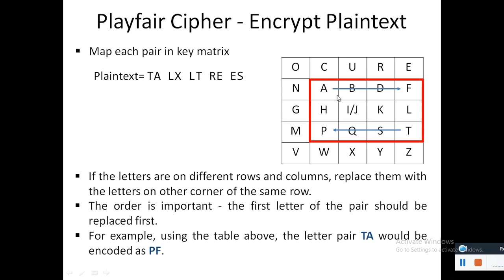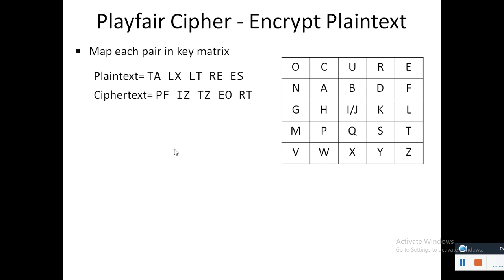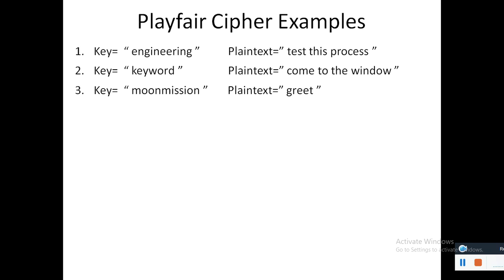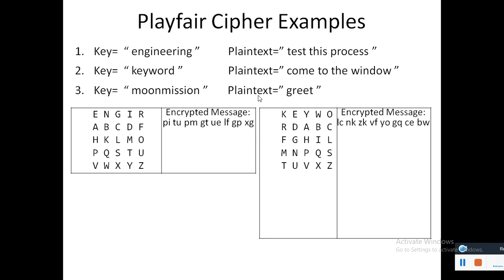So here we get the ciphertext. These are some of the examples that we can try, and this is the 5 by 5 matrix and this is the methodology of doing encryption using Playfair cipher. Hope you liked the video and definitely have a try. Thank you so much for watching.